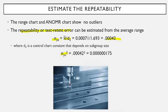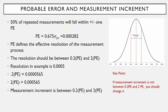Before we move on to the other variances, we want to focus on what you can use this standard deviation for pure error. You can use it to calculate something called the probable error. The probable error represents that 50% of repeated measurements are going to fall within plus or minus one probable error of the average. The equation for probable error is simply the standard deviation of the measurement system we just calculated times 0.675.